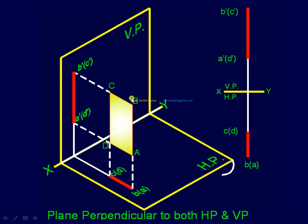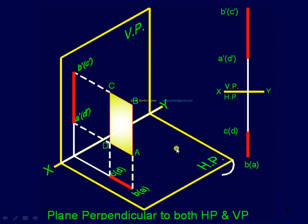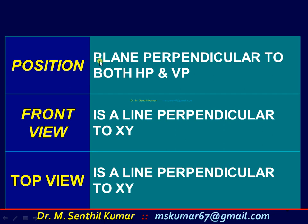Now, the rectangular plane ABCD is perpendicular to both HP and VP. In both the front view and the top view, it is seen as a line. The plane can be seen as a plane only in the side view — either the left side view or the right side view. To complete the projection, you have to start from the side view first, then get the front view, and combining the side view and front view, get the top view. Plane perpendicular to both HP and VP: side view is a line perpendicular to XY, front view is a line, top view is also a line.